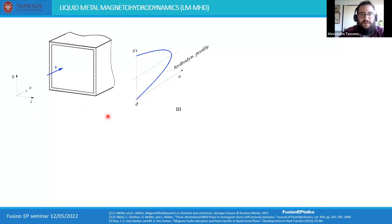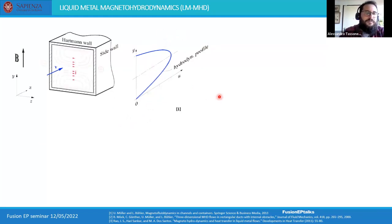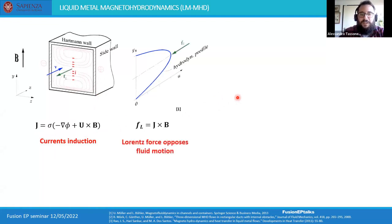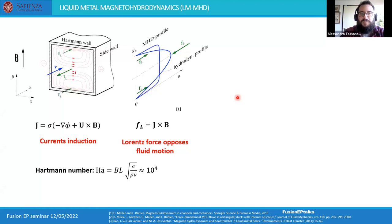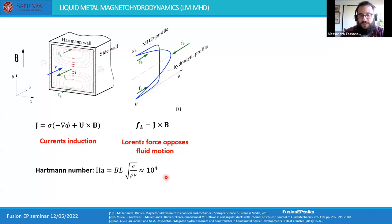Consider a square channel as representative of elementary geometry in a blanket. In hydrodynamic conditions with laminar flow, we expect a parabolic velocity profile. When we apply a magnetic field, currents are induced inside the liquid metal, and these currents interact with the magnetic field creating Lorentz forces that oppose fluid motion and modify the velocity profile into a much different shape. The degree of deviation between MHD and ordinary hydrodynamic conditions is characterized by the Hartmann number, which in a fusion reactor takes values close to 10^4.